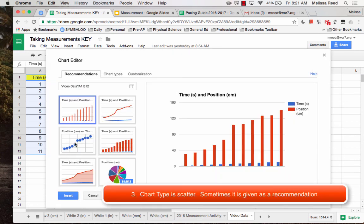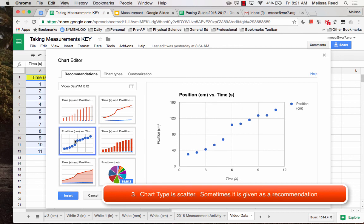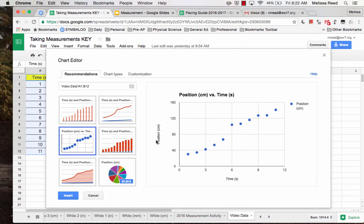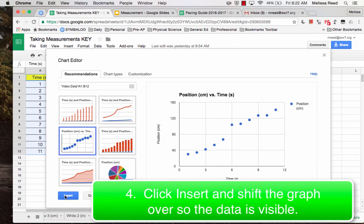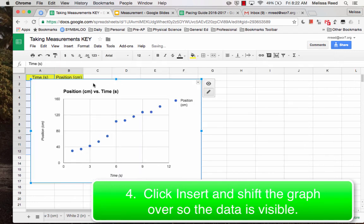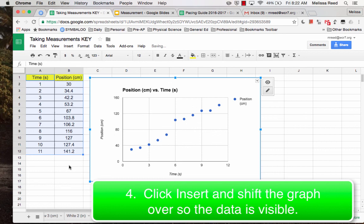Now notice what that looks like, that little button, because you have the same little button over here in your menu. So you want to insert a chart. Now, this type of chart right here is known as a scatter plot. And Google does it for you. So notice you're measuring time in seconds. You're measuring position in centimeters. It's known as a position versus time graph. And you simply click insert. Move it over just slightly so that it's not on top of your data. And you're done.